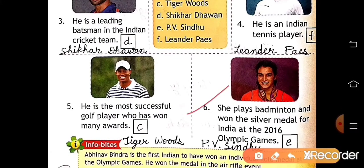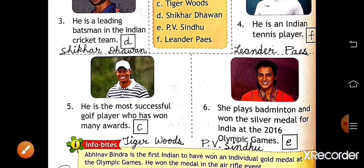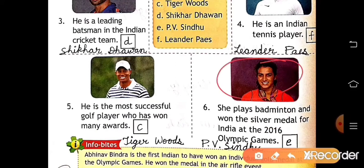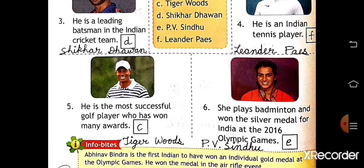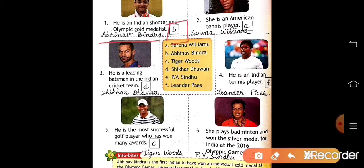Number six: she plays badminton and won the silver medal for India at the 2016 Olympic Games. She is P.V. Sindhu. Write the name P.V. Sindhu — she is at E number, so write E here. Like this, you have to write the name and alphabet also.